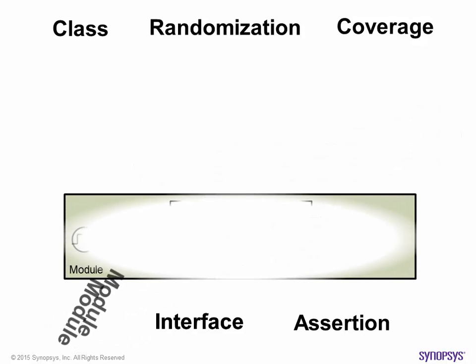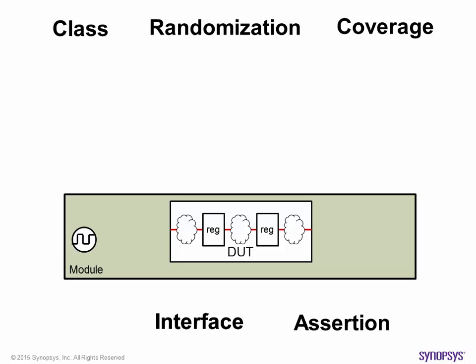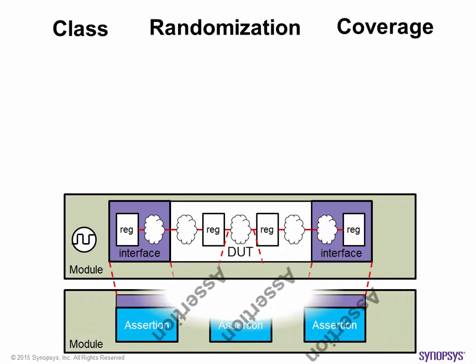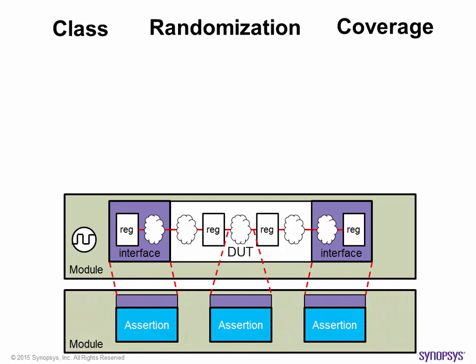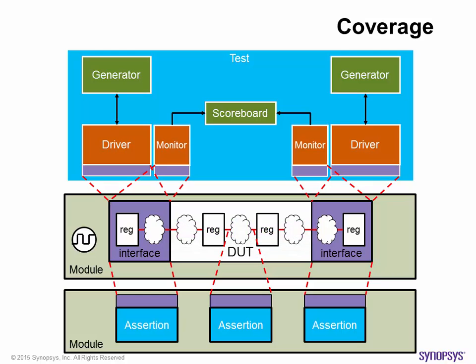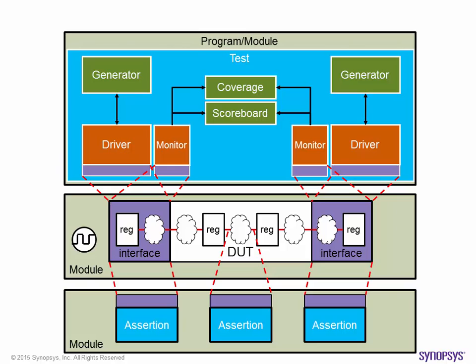Module is still what we use to implement RTL design and top-level test harness. The new interface mechanism gives us the ability to easily manage driving and sampling of signals. The System Verilog assertion simplifies how we do protocol check and coverage. Class in System Verilog moves design verification into the highly reusable world of object-oriented programming with easy management of stimulus generation, randomization, and coverage. The test is then started in either a program block or module.